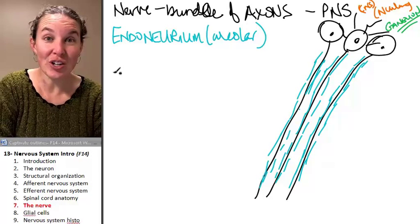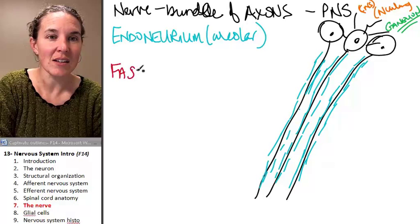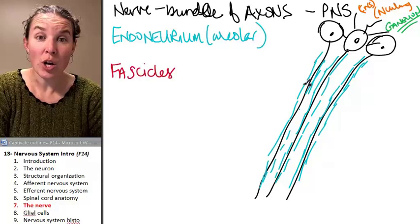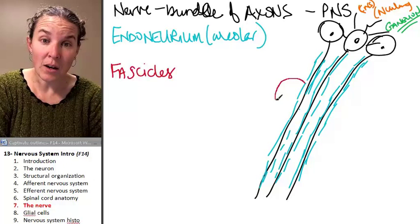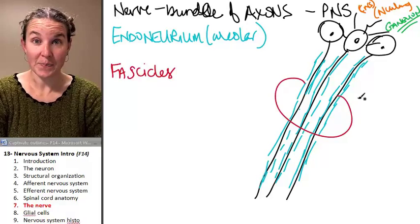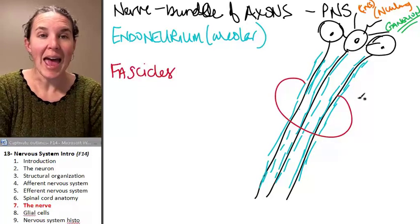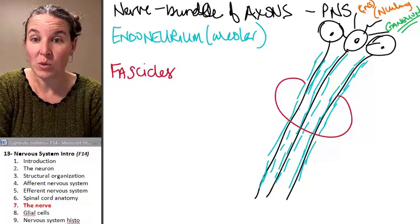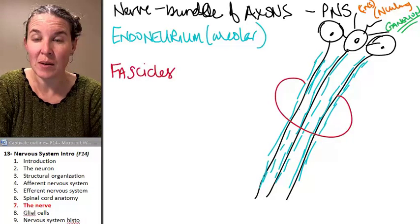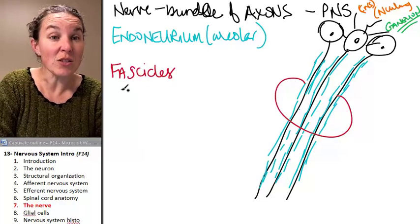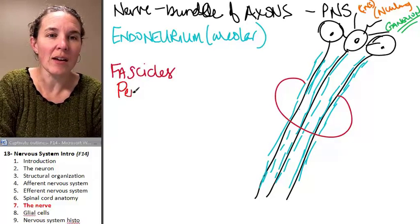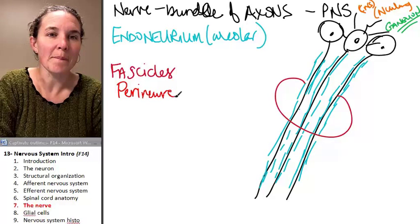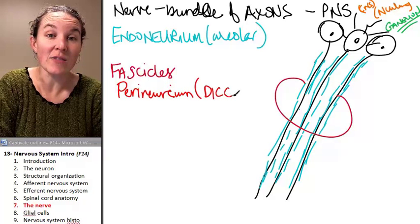So just like muscles, nerves have fascicles. And fascicles are groups of axons in a little bundle. And the fascicle is surrounded by, just for the heck of it, we'll change our color slightly, but not much. Our fascicles are surrounded by, what do you think, perineurium. And that is dense, irregular connective tissue.